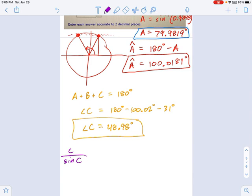Little c over sine C equals, let's just pick little a. You could do either one you want at this point - we know just about everything. So that means little c equals little a times sine of angle C divided by sine of angle A.